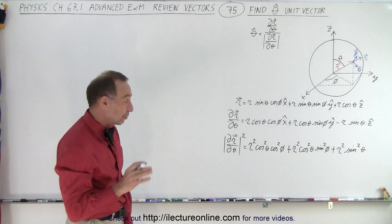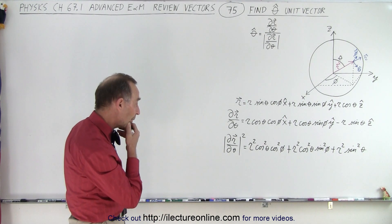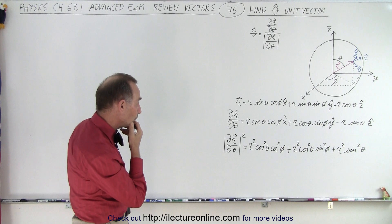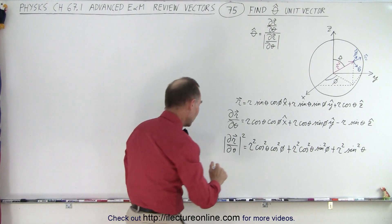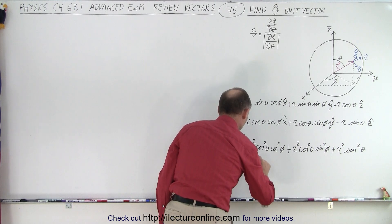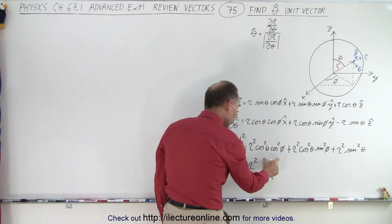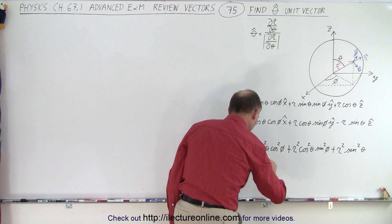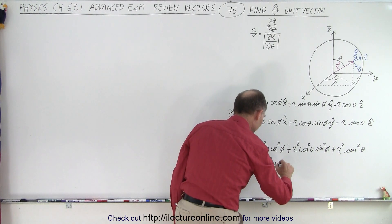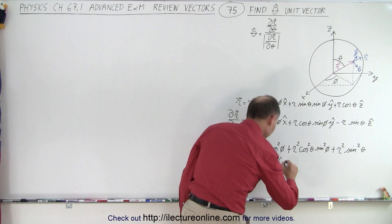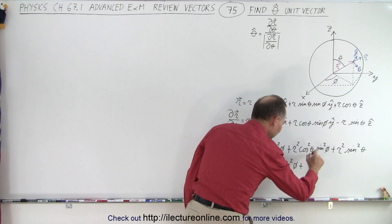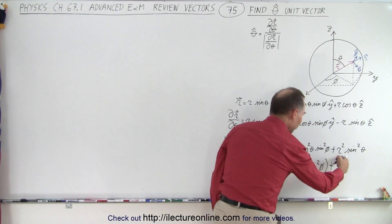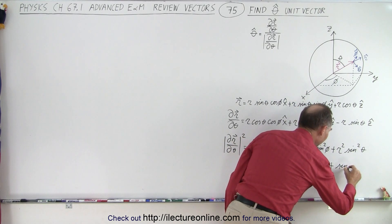Looking at those three terms, we can factor out r². From the first two terms we can also factor out cosine²(θ), leaving cosine²(φ) plus sine²(φ) inside the brackets. The r² is also factored from the third term, leaving sine²(θ). So we have r² times [cosine²(θ) times (cosine²(φ) + sine²(φ)) + sine²(θ)].